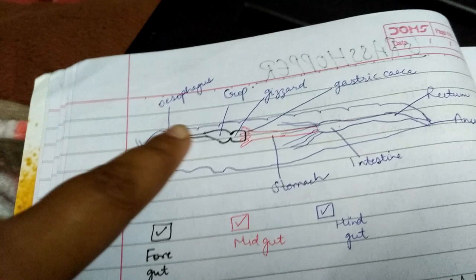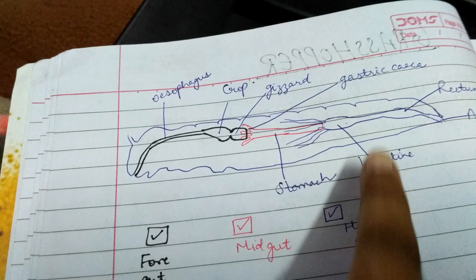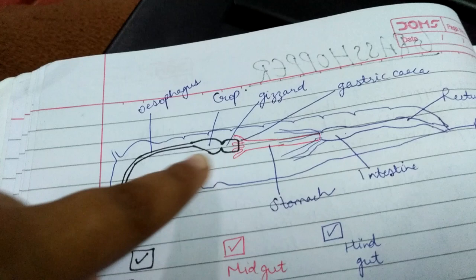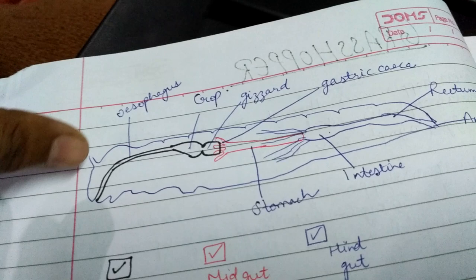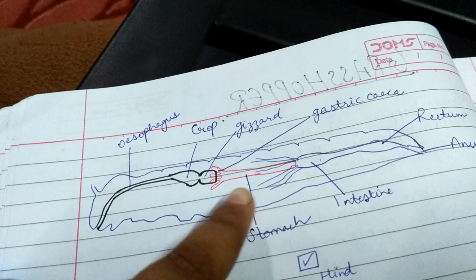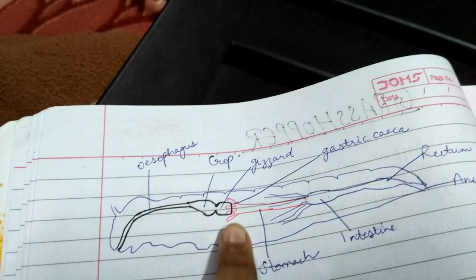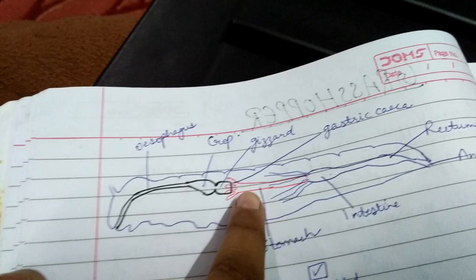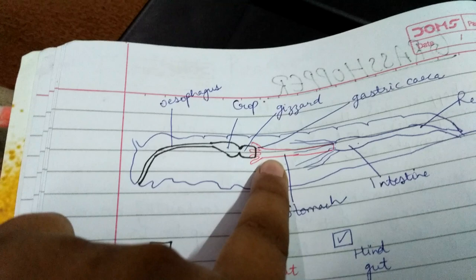I have marked foregut with black color, midgut with red color, and hindgut with blue color. In foregut, it only has esophagus, crop, and gizzard, which is having cuticular lining. It is ectodermal in origin. Because it is ectodermal in origin, it has a cuticular lining, and that is why it is not involved in the digestion of food. Midgut, shown in red color, is composed of gastric ceca and stomach. The main part of digestion is the stomach.